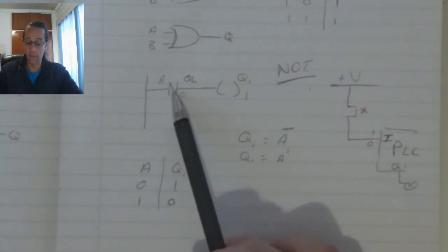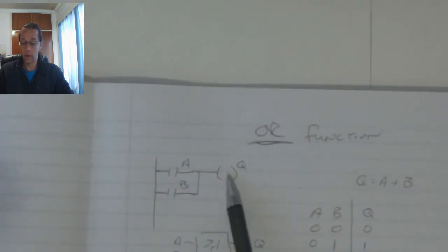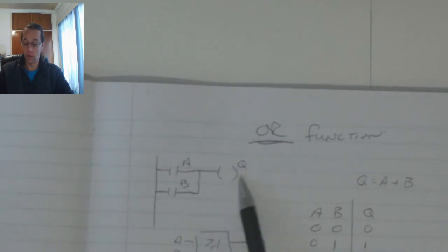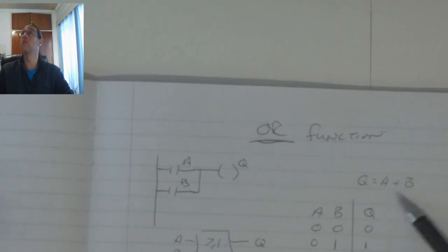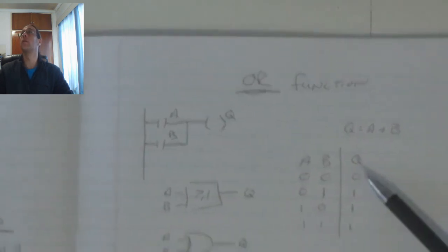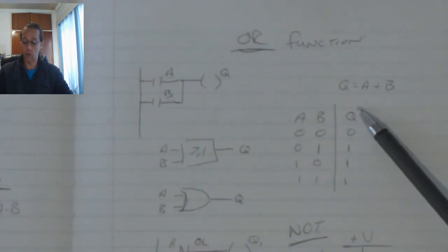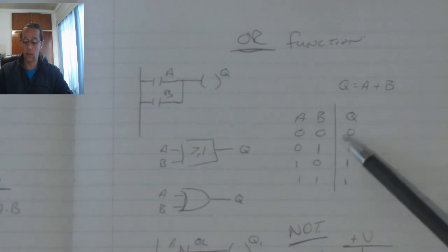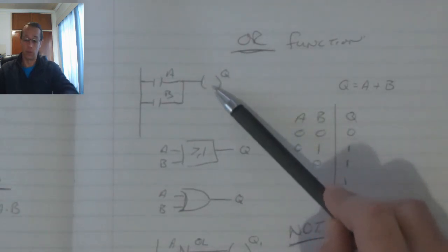If we were to invert that function over there, then the result, in other words the A plus B result, will then be inverted.